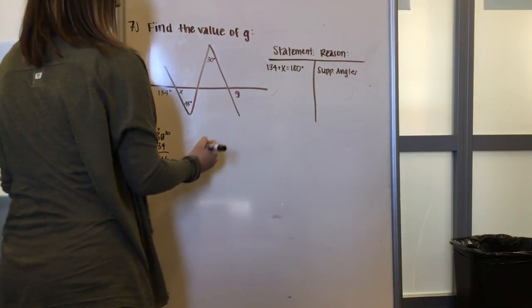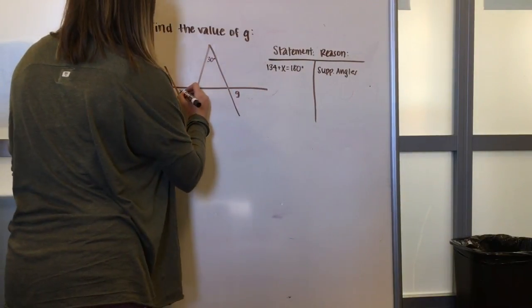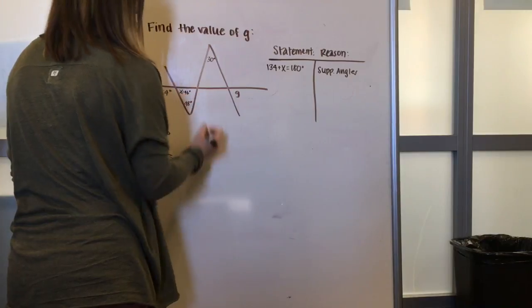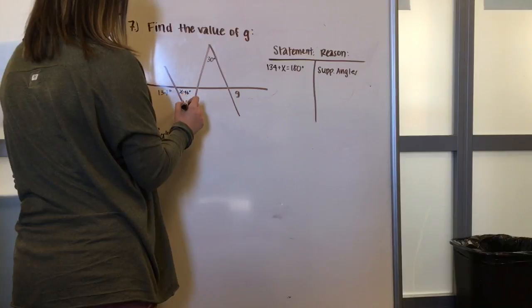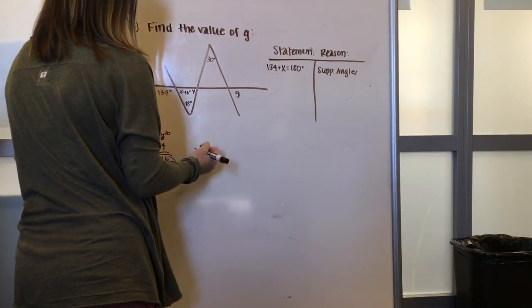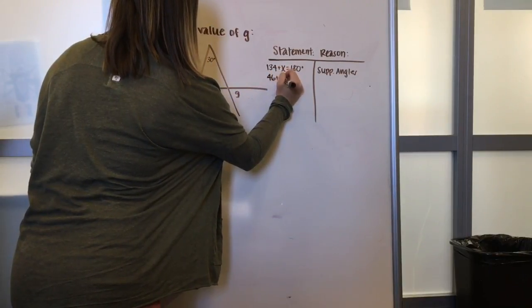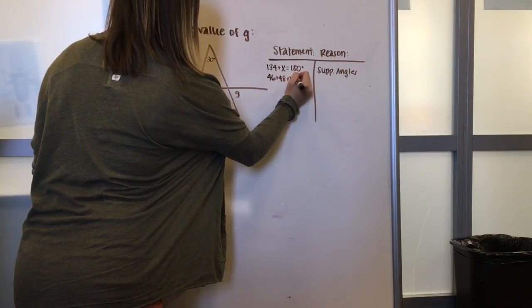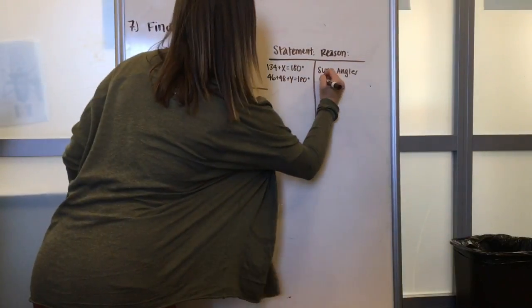Upon simplifying, we will see that x equals 46 degrees. For step 2, we know that this 46 degrees plus 48 degrees plus the measure of this angle y also equals 180 degrees. This is because of the triangle sum theorem.